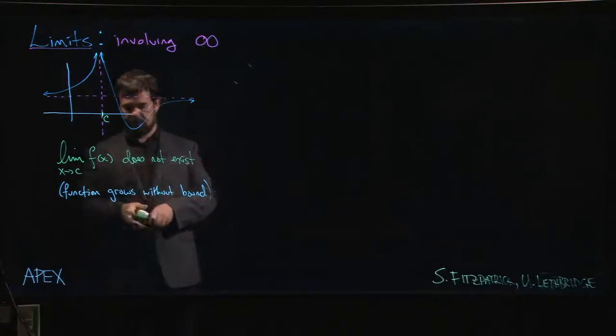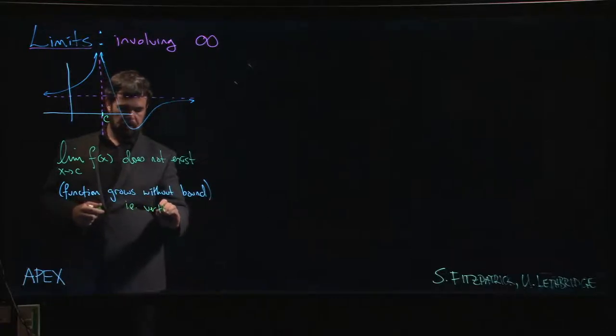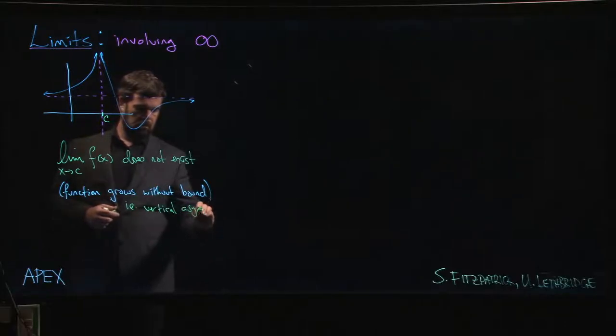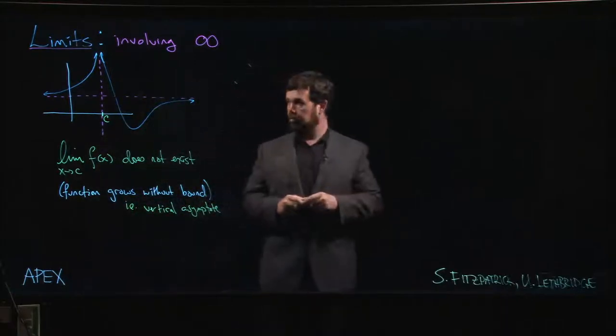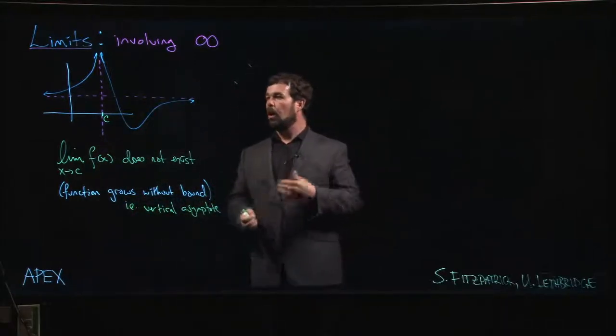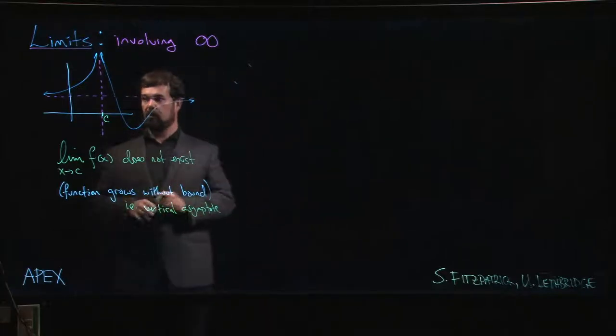We have essentially a vertical asymptote. You're probably familiar with vertical asymptotes and horizontal asymptotes from basic graphing that you might have learned in high school or in a pre-calculus course.